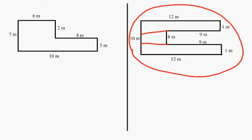Then you find the area of the first box. The length is 1 meter and the width is 12 meters. You multiply them and get 12 meters squared.